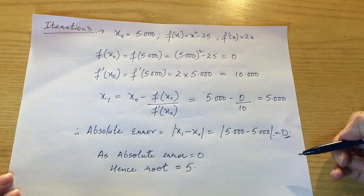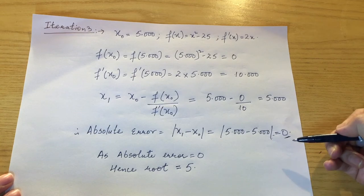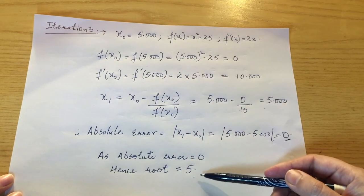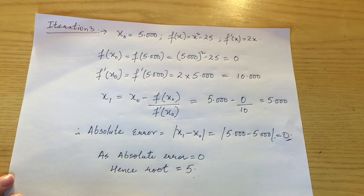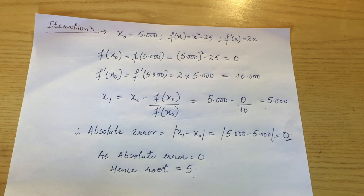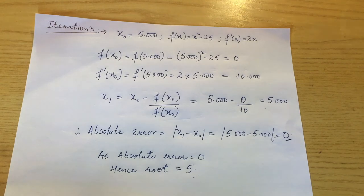Since the absolute error is 0, there is no need to proceed further. The root of the given equation is 5.000. As discussed in the previous lecture, the iterative procedure terminates when the relative error for two successive approximations becomes less than or equal to the prescribed tolerance.